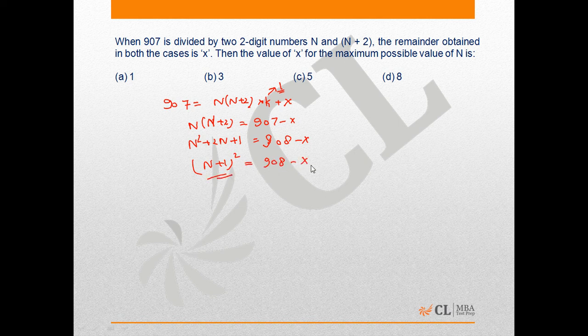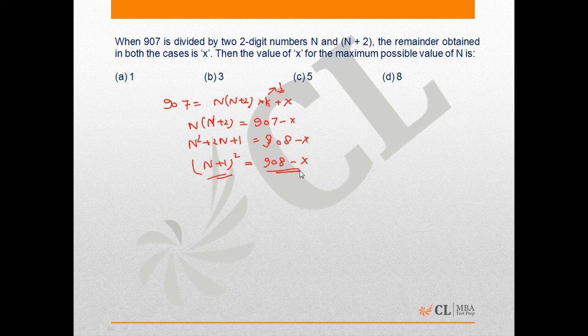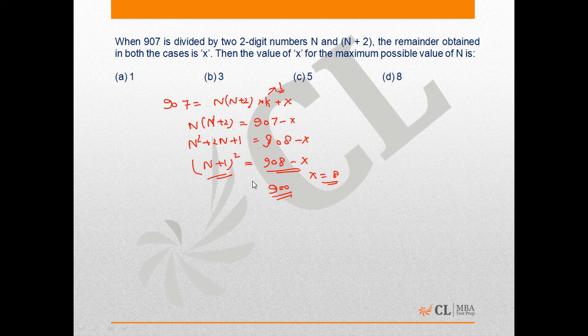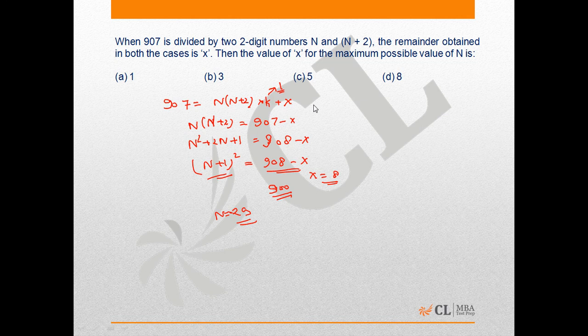Now this has to be a perfect square. If you put x equal to 8, this gives you 900, which is 30², and the value of N will be 29. X equals 8, which is option D.